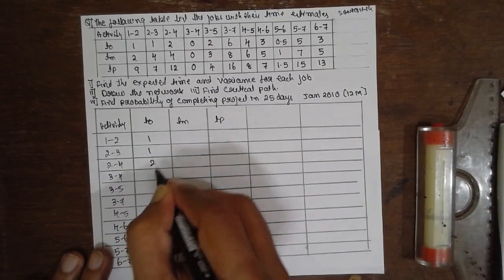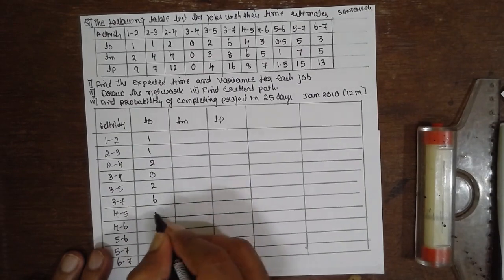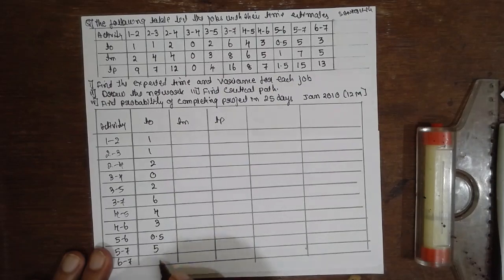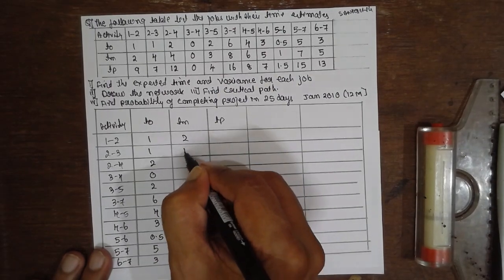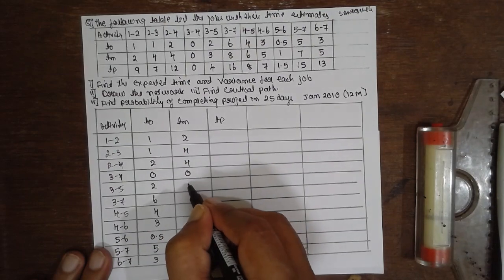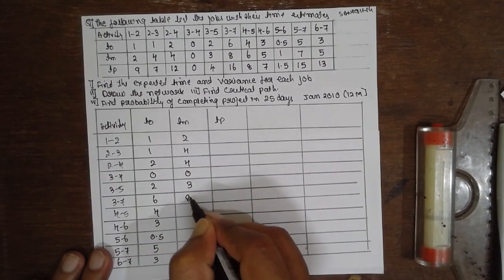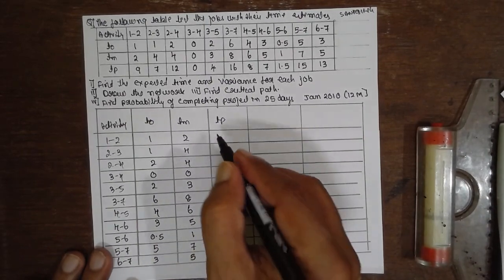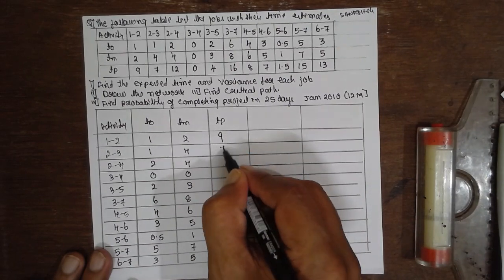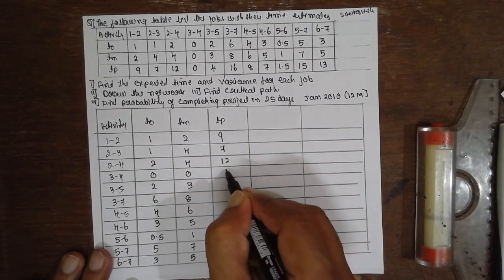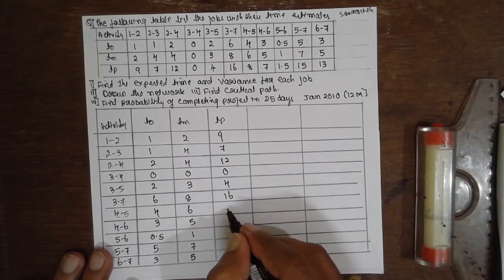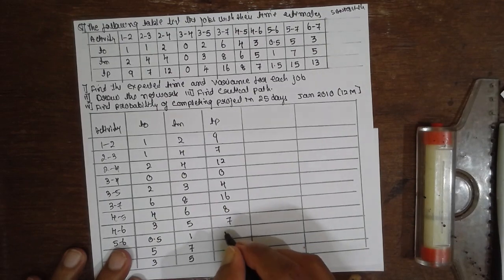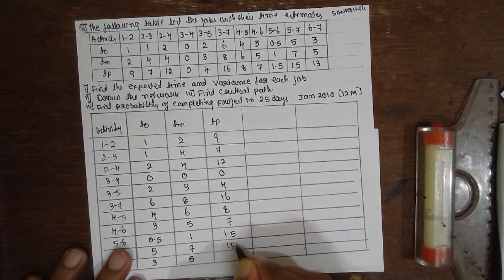The values are: 1, 2, 6, 4, 3, 0.5, 5, 3, 2, 4, 4, 0, 3, 8, 6, 5, 1, 7, 5, 9, 7, 12, 0, 4, 16, 8, 8, 7, 1.5, 15, 13.